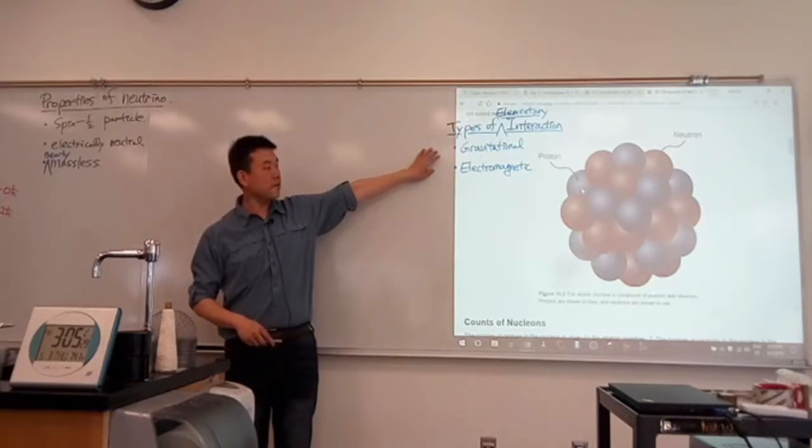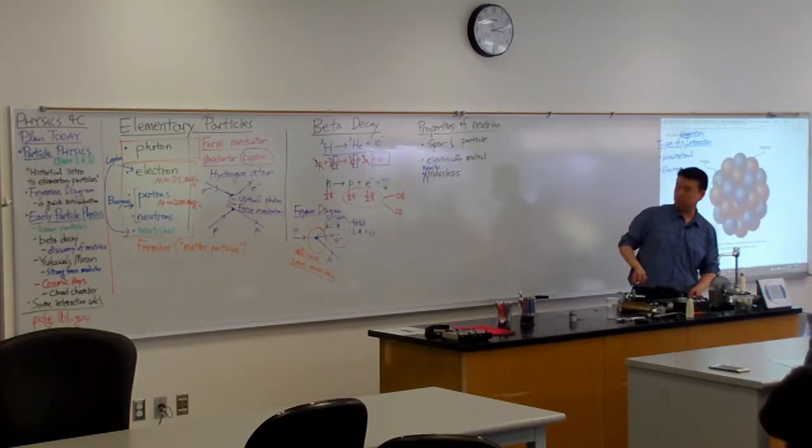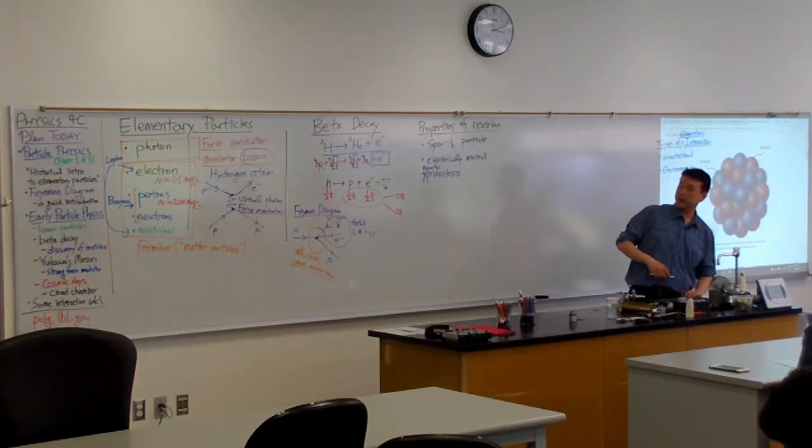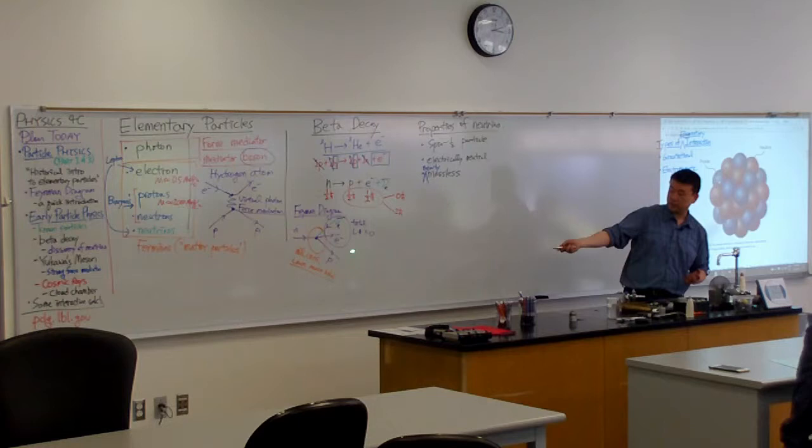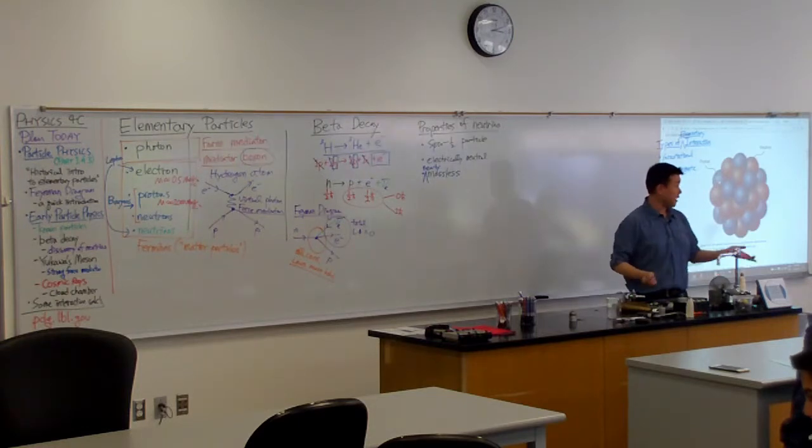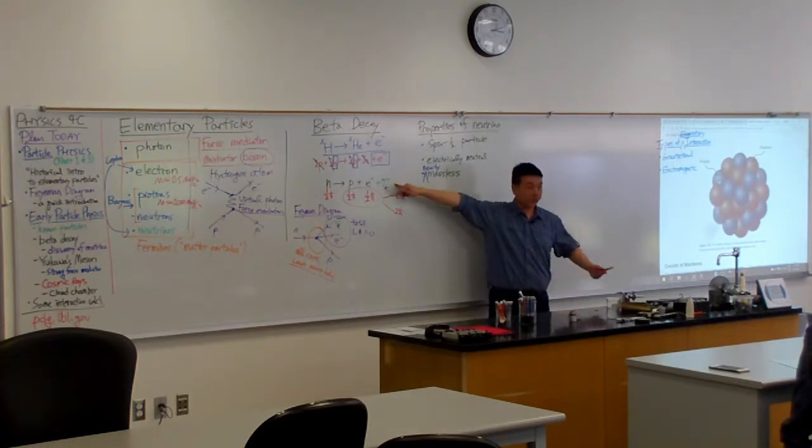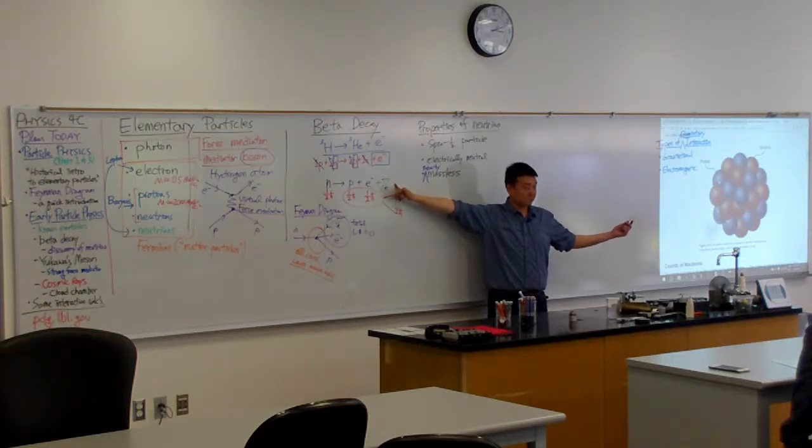So you might look at beta decay - that's a nuclear interaction that involves some kind of interaction that doesn't involve electromagnetic force, because this neutrino is electrically neutral, so it probably couldn't have anything to do with electromagnetic interaction.